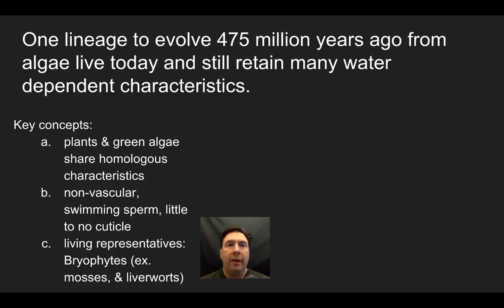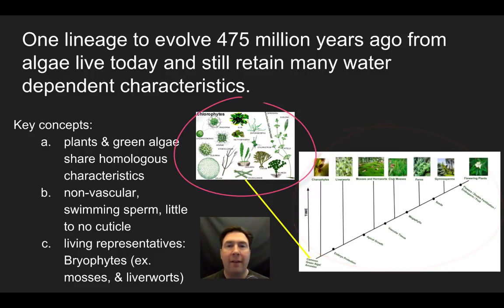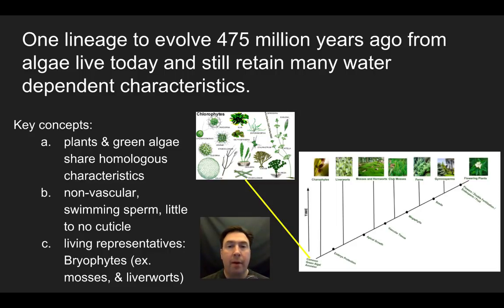The first true plants evolved from a group very similar to modern day green algae approximately 475 million years ago. On the cladogram in the lower right, I've branched off and added the chlorophytes — the green algae that are most plant-like. They share homologies with plants: they're green, they have chlorophyll, and many have cell walls very similar to those in plants. Our big homologous characteristics are the pigmentation and the presence of photosynthetic chloroplasts and similar metabolic mechanisms.